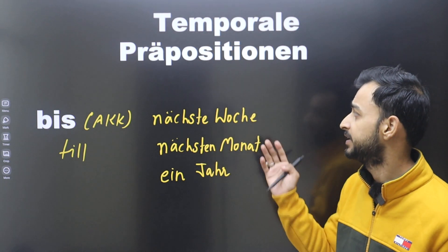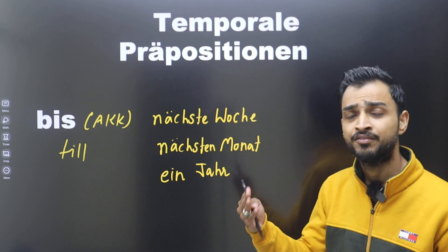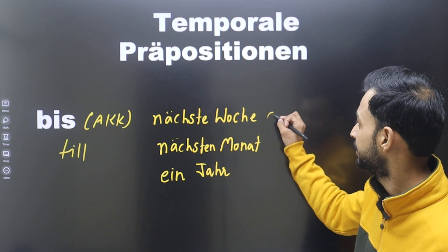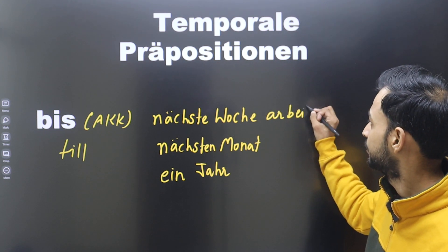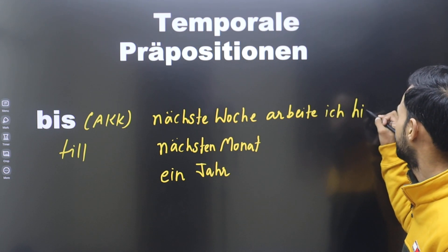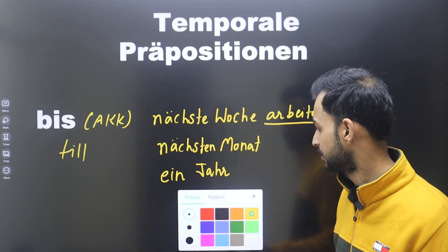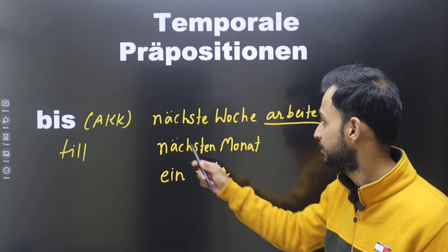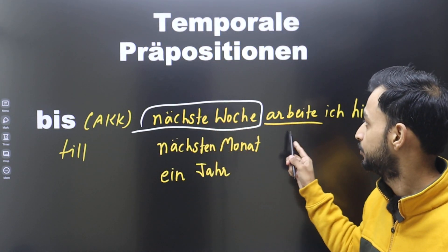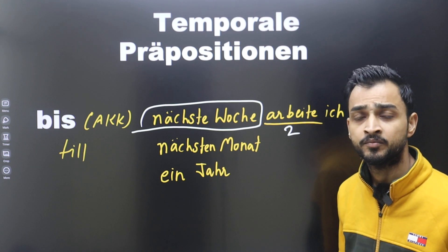For example: 'Bis nächste Woche arbeite ich hier' — till next week I will work here. Note the verb position — this is the second position verb. 'Bis nächste Woche' is one phrase, then comes the verb in second position.